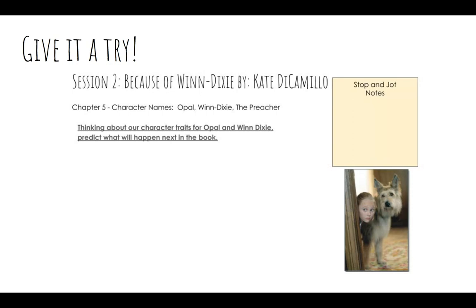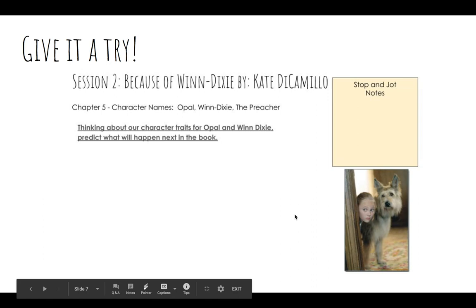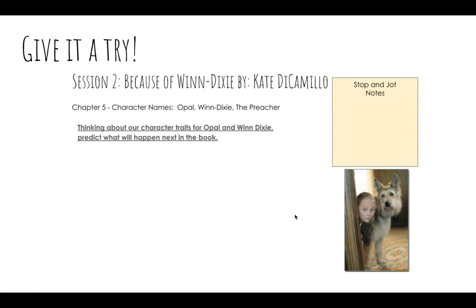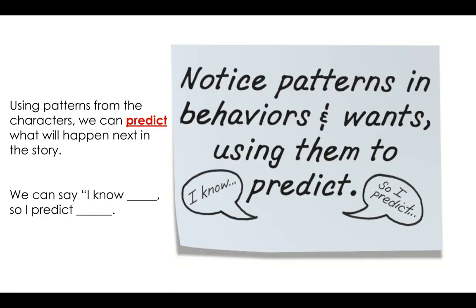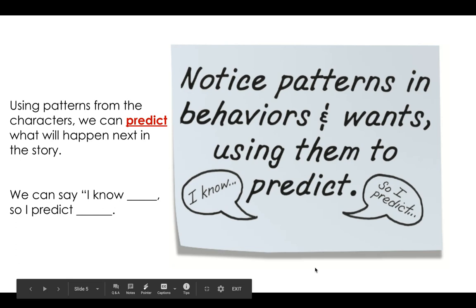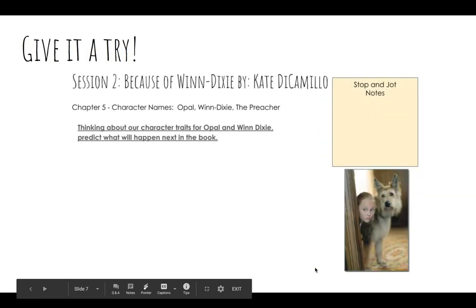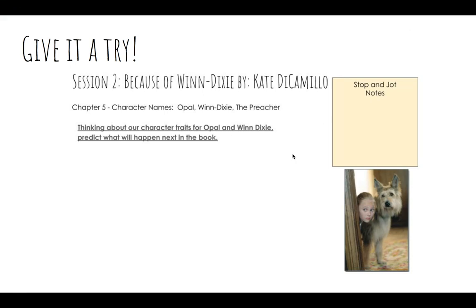Now I want you to give it a try today with either Opal, Winn-Dixie, or the preacher. After you have listened to the read-aloud for chapter five, you will respond on this template. Make sure that you say 'I know [character]..., so I predict that...' — for example, 'I know Opal, so I predict that she will take great care of Winn-Dixie,' or whatever you think fits for chapter five. Have fun!